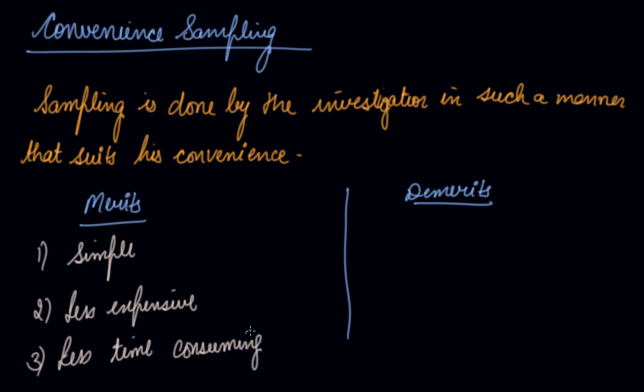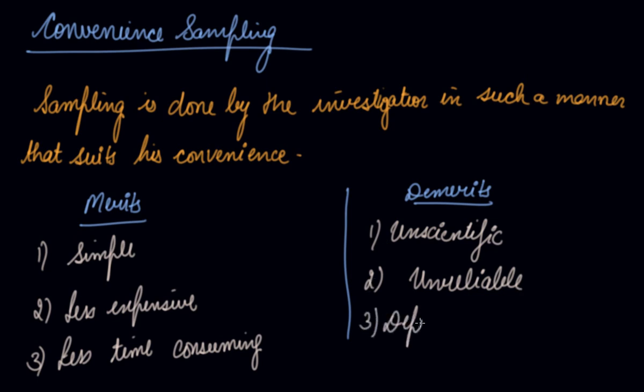Whereas its demerits are, this is unscientific. It may not draw reliable results, so it is unreliable. Because it's according to the wish of the investigator, his convenience, it depends on the whims, that is the wish of enumerators.